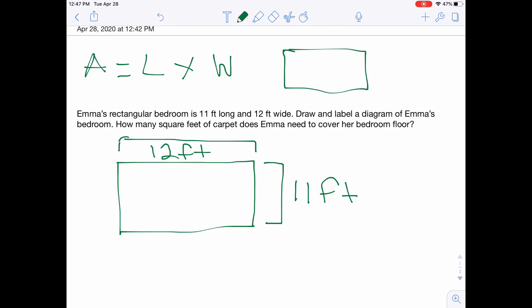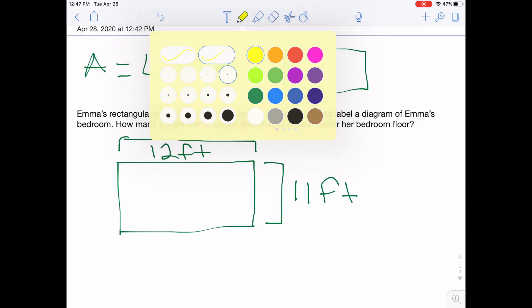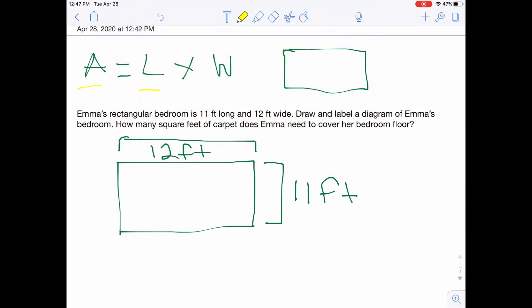I want to remind you that area is length times width. And when we're doing area, you're looking to figure out what's the inside portion. That's whenever we do it, we usually do things like square feet or centimeters squared, because we're trying to figure out what the whole inside portion is.